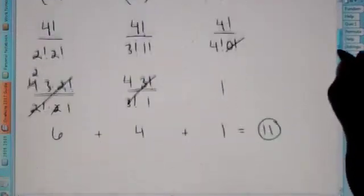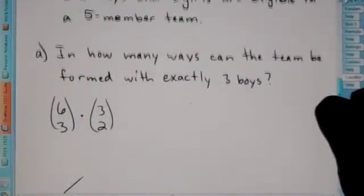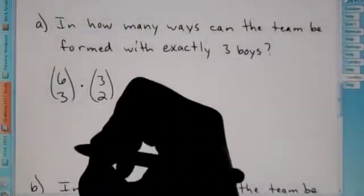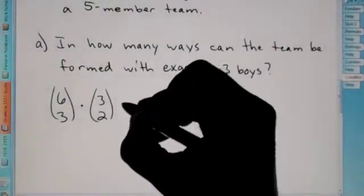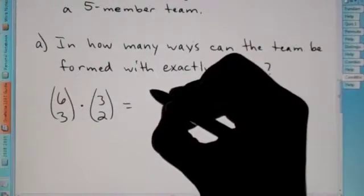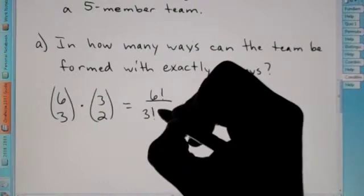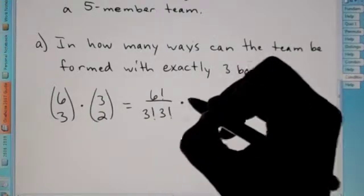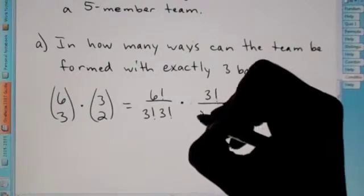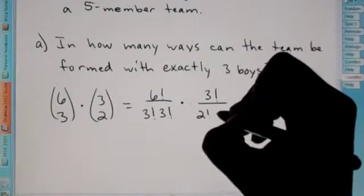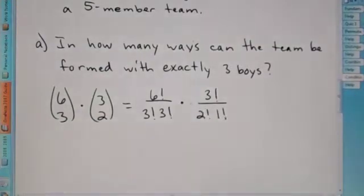Notice that's why we added here, because these are all three separate. But on this problem we multiplied because these two options make up one team. That's why we multiply. So, if I were to set this up, I have six factorial over three factorial. Six minus three is three factorial. Times three factorial over two factorial. Three minus two is one factorial.